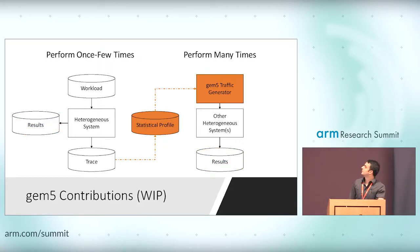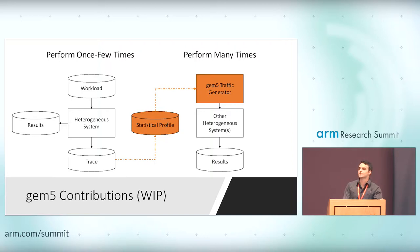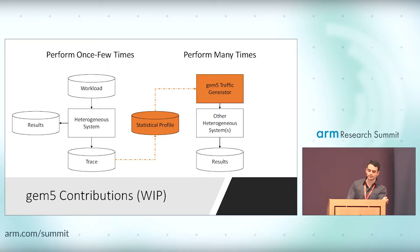In this talk, I'll be discussing our contributions, which are still a work in progress — they're not in GEM5 yet, but we hope to have them there in the future. There's now an arrow going from the trace to the statistical profile. Right now, nothing currently does this. We're going to release a tool that will generate a model or statistical profile based off of traces, and we're doing extensions to the GEM5 traffic generator to accept these models and accurately generate synthetic traffic.